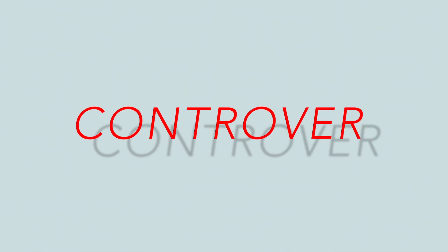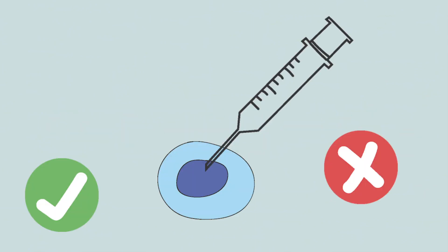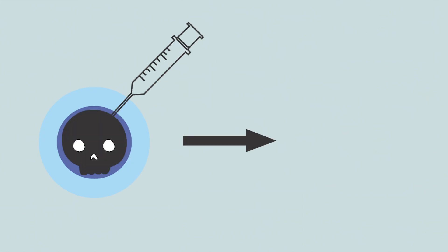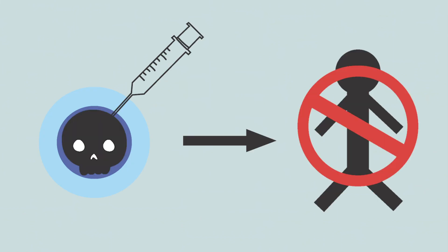Now, on to the main controversy of stem cell research, the ethical implications of obtaining them. Stem cells come from embryos, which means one would have to destroy an embryo to obtain it, preventing the fertilized egg from developing into a person.